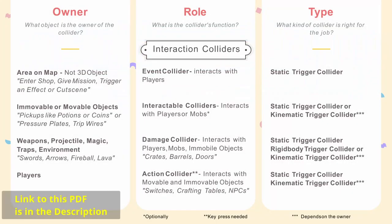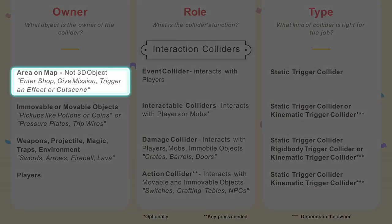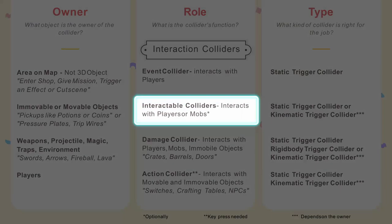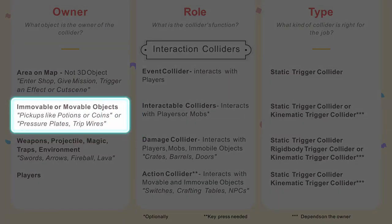Interaction colliders always have a related spatial collider which they interact with. Event colliders interact with the player, which could trigger a cutscene or some visual effects, like lowering lights upon entering a dungeon, or initiating a peaceful mode when entering a shop. Interactable colliders interact with the player mostly, but could also interact with other mobs. They don't need any extra interaction like a key press — just simply entering the area. They can be a pressure plate to open a door, trigger a trap, or they could be pickups like potions or coins.